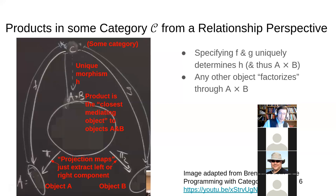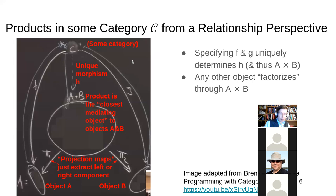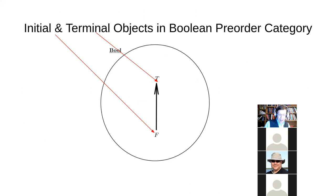So that's the notion of product here. What's the product in the Boolean pre-order category? You should be looking for an object that's as close as possible to the two things of which we're taking the product. Suppose we were to take the product of false and true. We need the closest object to those two through which every other object that can be mapped to both of them passes. The product has an arrow pi-one to A and pi-two to B.